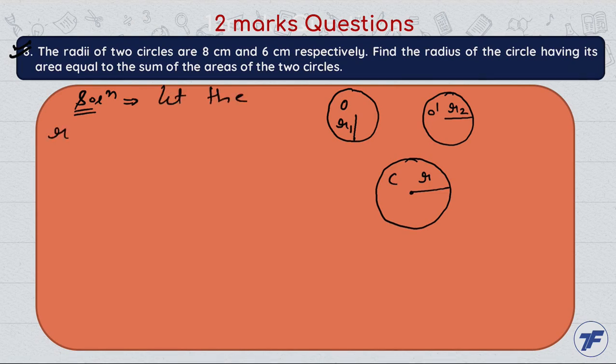radius of circle with center O and O dash are r1 and r2 respectively.